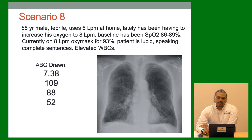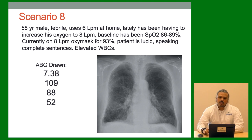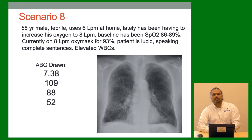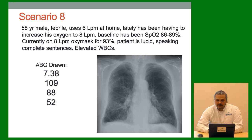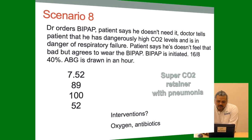Next scenario: 58-year-old male, febrile, uses 6 liters at home, has been trying to increase to 8 liters. Baseline SAT 86-89%. Currently on 8 liters oxymask for 93%. Patient is lucid, speaking in complete sentences, elevated white blood count. Gas: 7.38 / 109 / 88 / 52. X-ray shows COPD — tall lungs, flattened diaphragm — with some schmutz in the lungs. Elevated white count suggests probable pneumonia on the right side. ABG shows a very high CO2 of 109. But why is his pH normal? Why is he lucid and cracking jokes? Look at his bicarb — it's 52. His bicarb is so high it's making his pH normal. He may walk around at CO2 of 109.